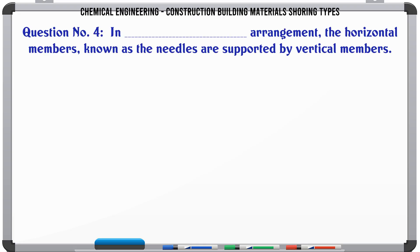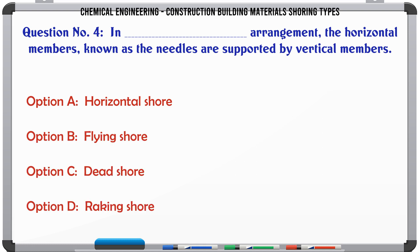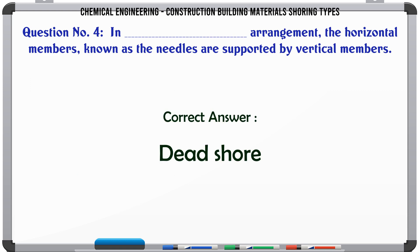Question 4: In blank arrangement, the horizontal members known as the needles are supported by vertical members. Options: A. Horizontal shore, B. Flying shore, C. Dead shore, D. Raking shore. The correct answer is Dead shore.